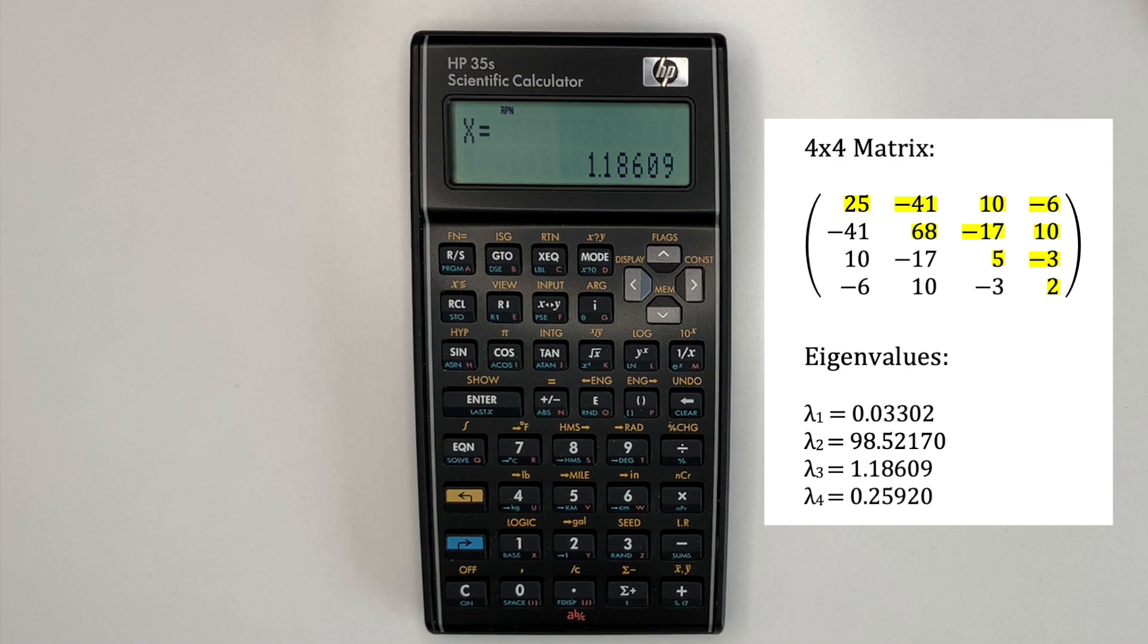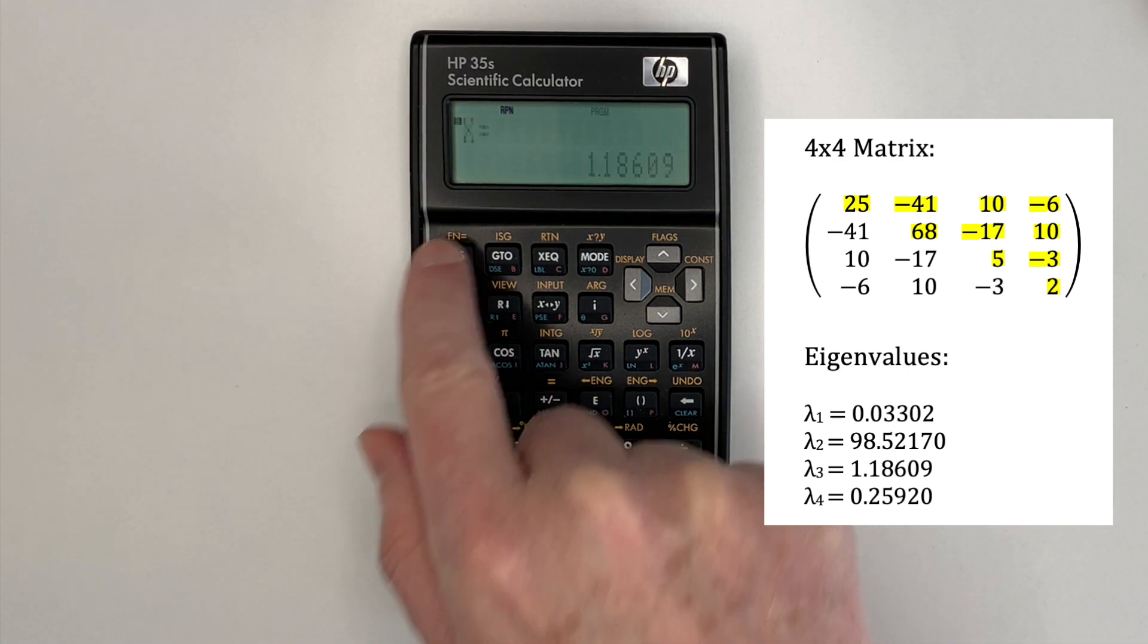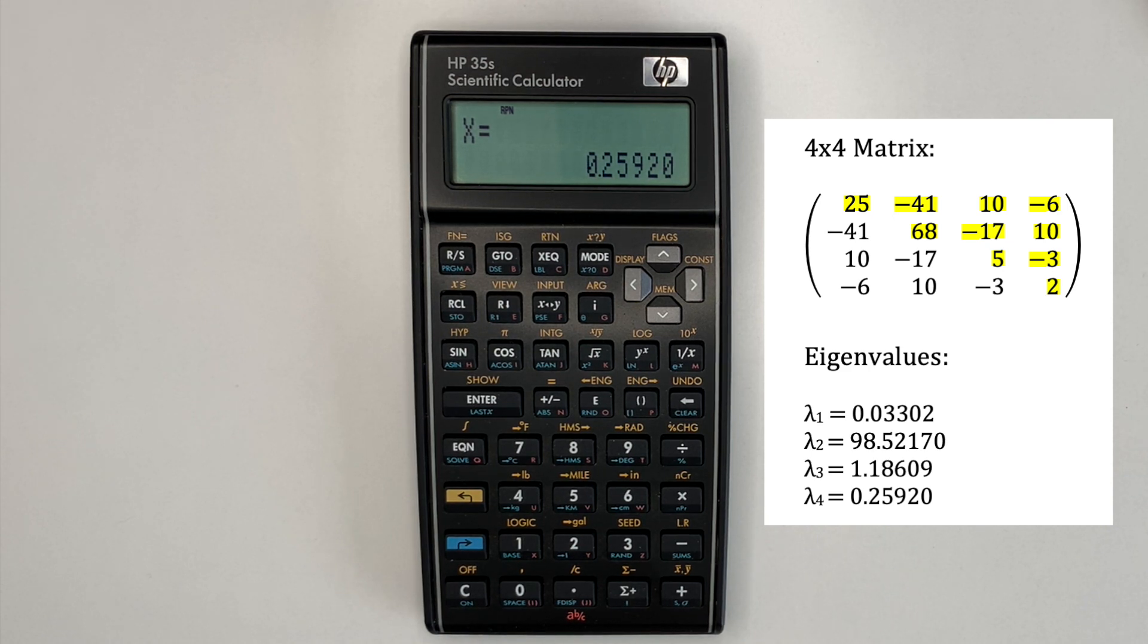Next one, 1.18609, which is correct. Finally, 0.25920, which is also correct.